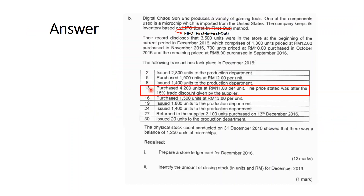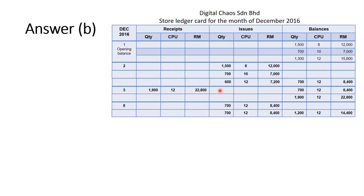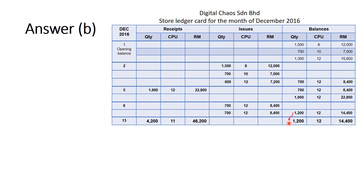On 13th December, we purchase 4,200 units at RM11 per unit — this price is already after the 15% trade discount given by the supplier, so we take this figure directly as the cost per unit. The total is 4,200 × RM11 = RM46,200. We bring forward the previous balance and record the newest stock at the bottom of our record.